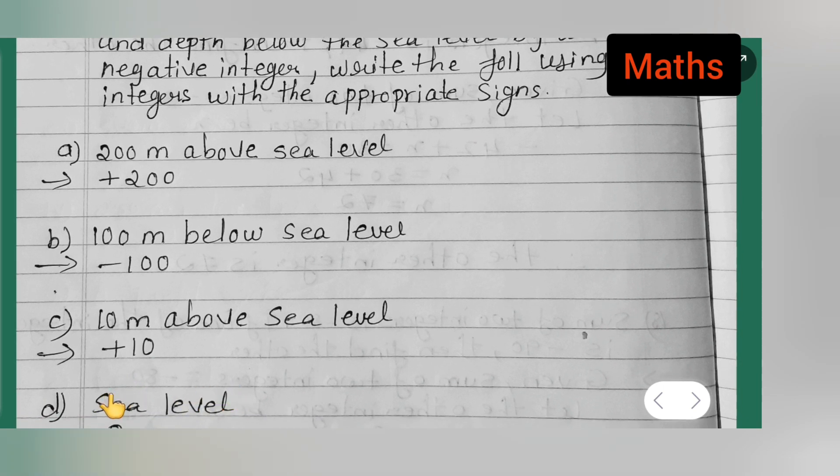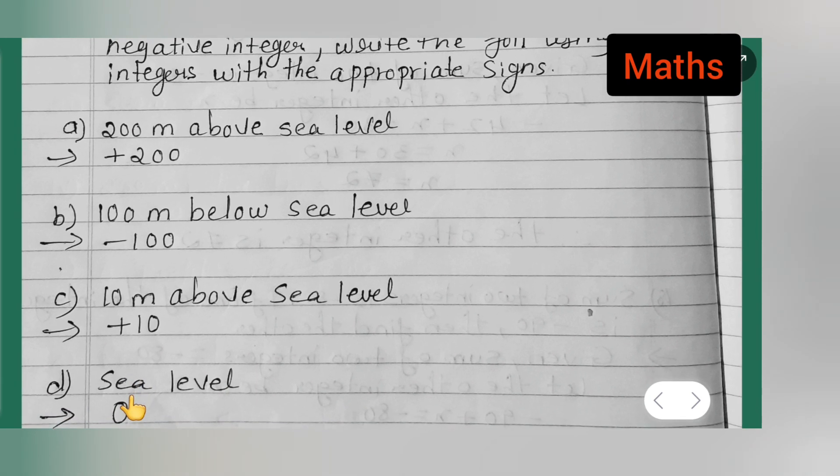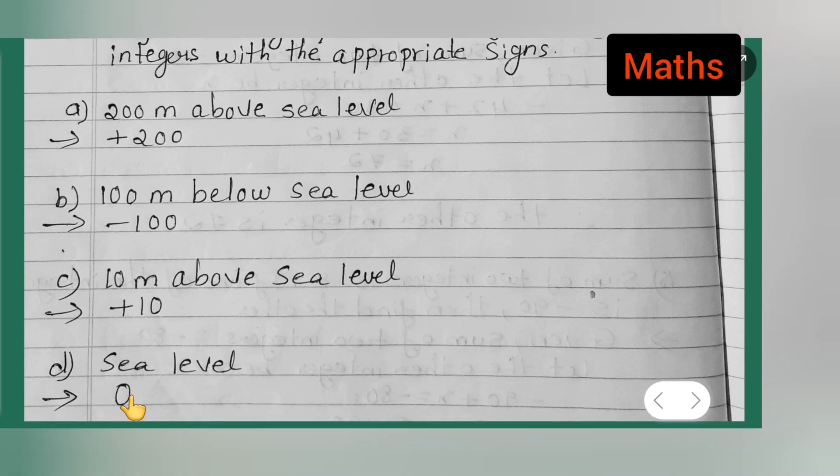The fourth one is sea level. So what will be the answer? It will be zero. You can take down this answer.